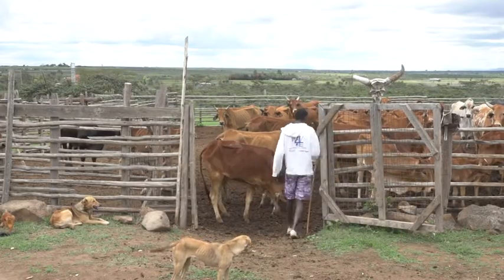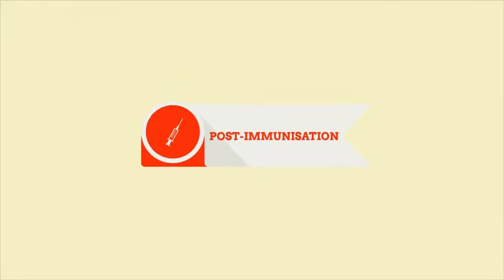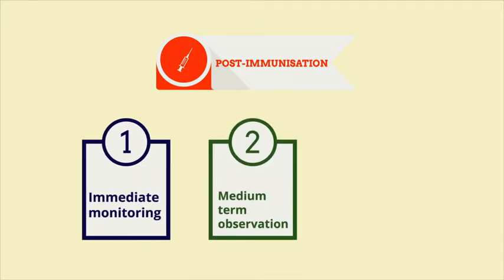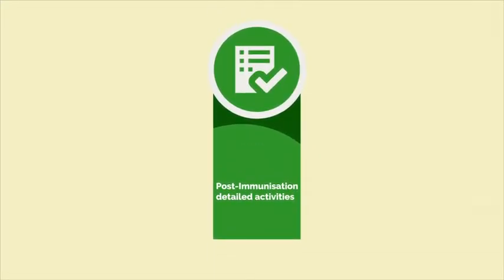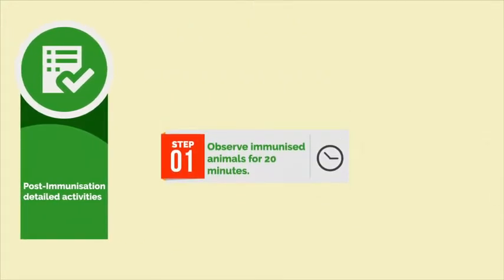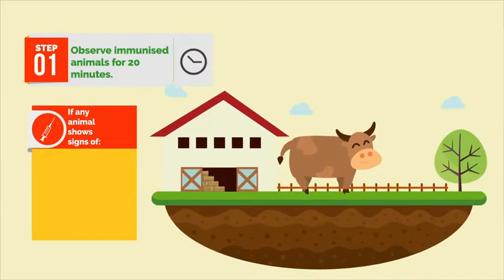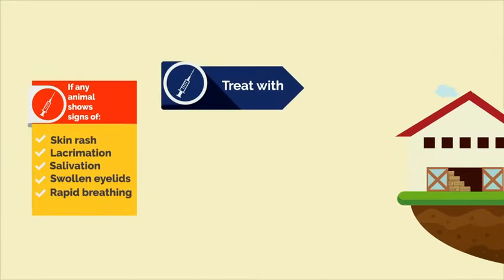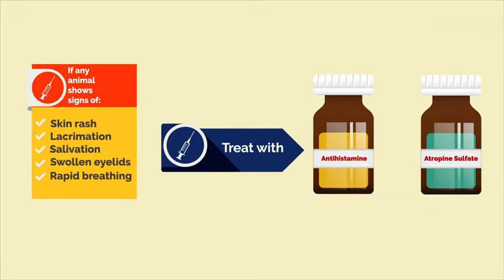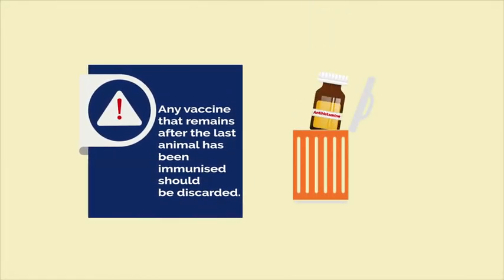Having successfully completed phase 2 and immunized the cattle, it is very important to carry out phase 3: post-immunization. Post-immunization consists of: 1. Immediate monitoring, 2. Medium-term observation, and 3. Tick control. Step 1: Observe the immunized animal for 20 minutes for possible allergic reactions. If any animal shows signs of such reactions — skin rash, lacrimation, salivation, swollen eyelids, or rapid breathing — treat it with an antihistamine or atropine sulfate at the manufacturer's recommended dosage. Any vaccine remaining after the last animal has been immunized should be discarded.